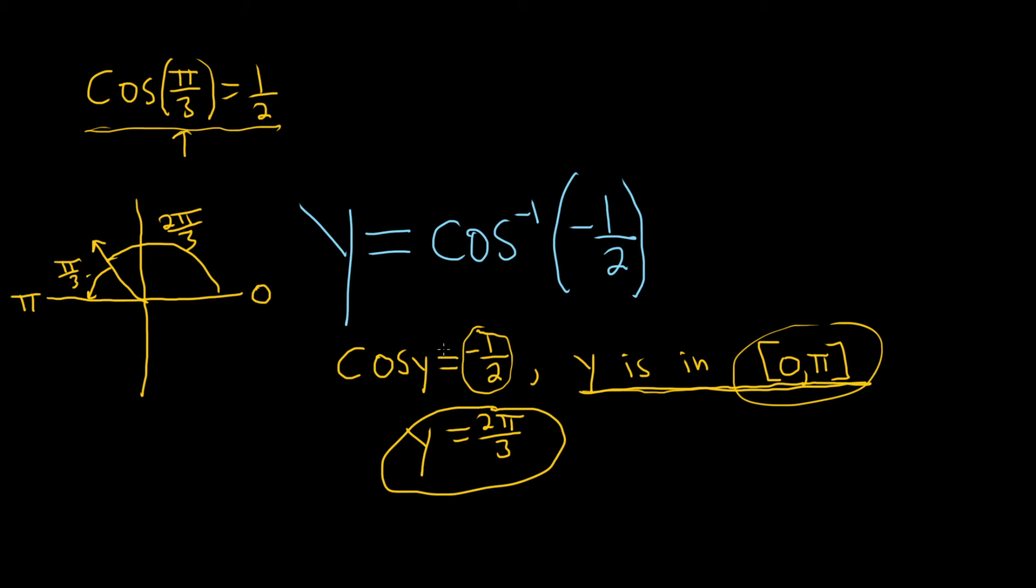So you know that the other angle you need has to be related to π over 3. It has to have the reference angle of π over 3. So it has to be in quadrant 2 because cosine is the x-coordinate on the unit circle. And this is where it's negative, right? X is negative here. It can't be down here because this restricts us.